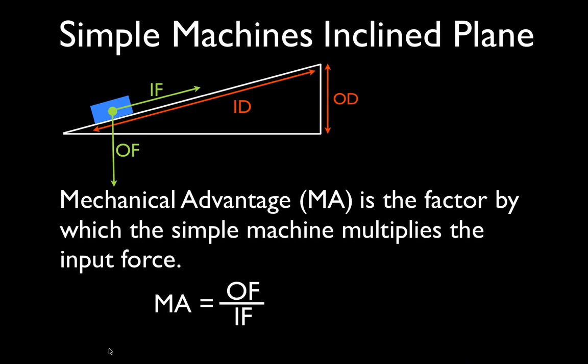Mechanical advantage is abbreviated MA. The mechanical advantage is simply the output force divided by the input force, or it's the input distance divided by the output distance.